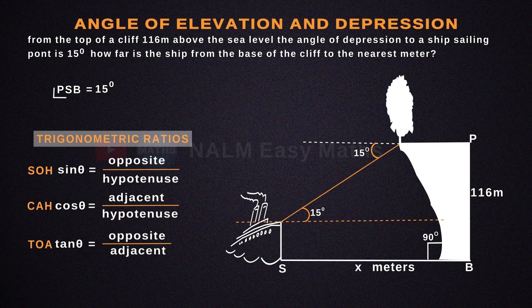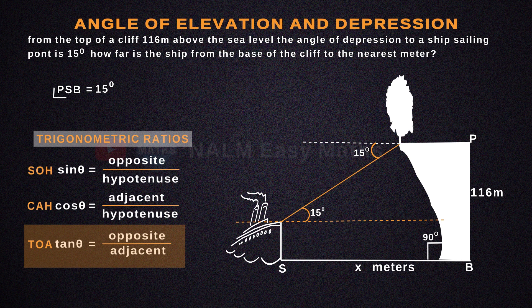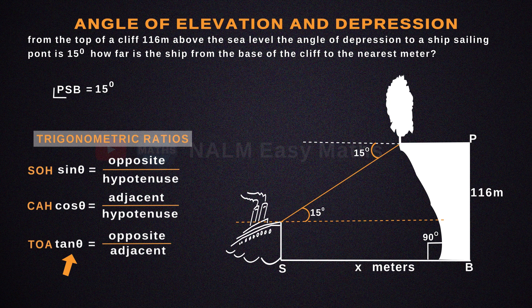Here we want to find the base of our triangle, which is the distance from the ship to the cliff. Therefore, the best trigonometric function for this occasion is TOA, because the values we have present fall under TOA. We'll use the TOA ratio — that is, tan theta equals opposite over adjacent.